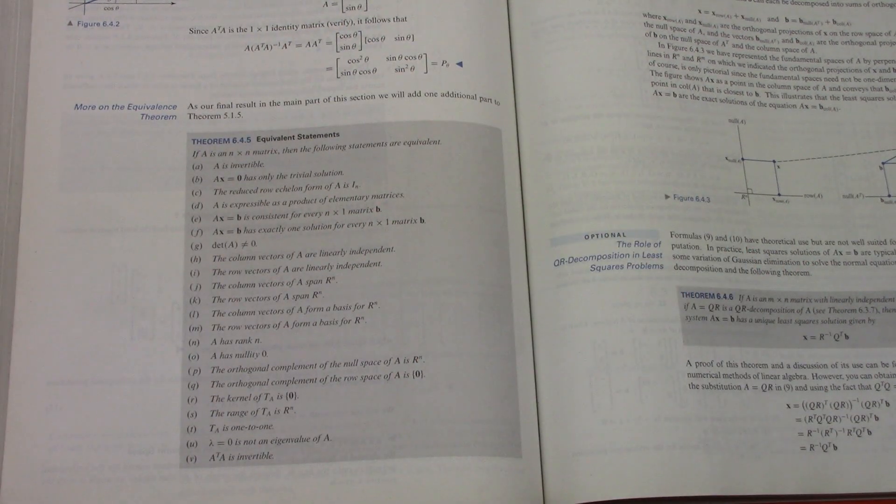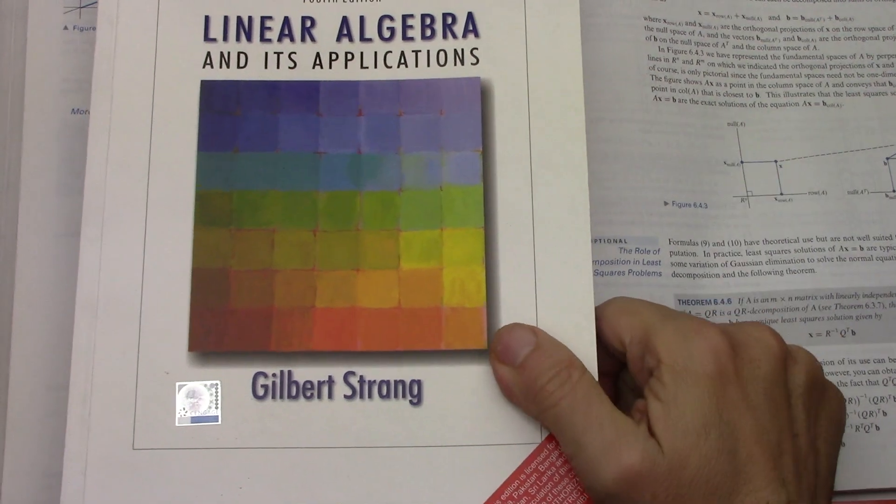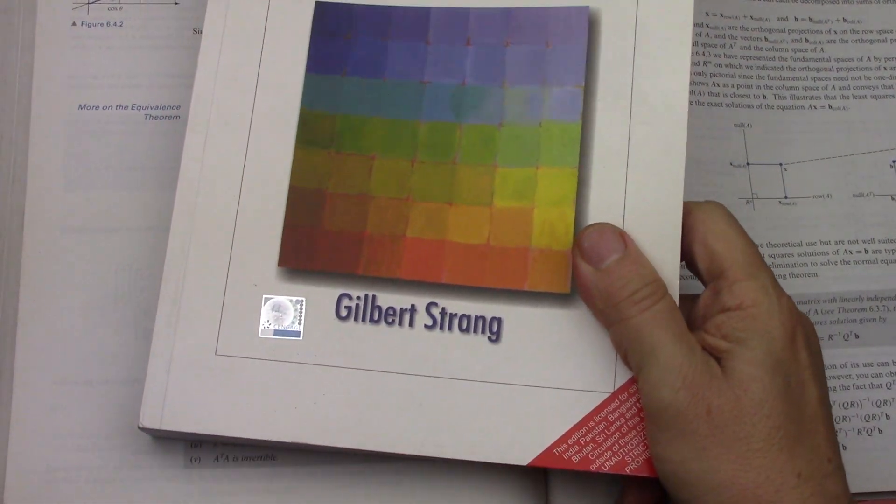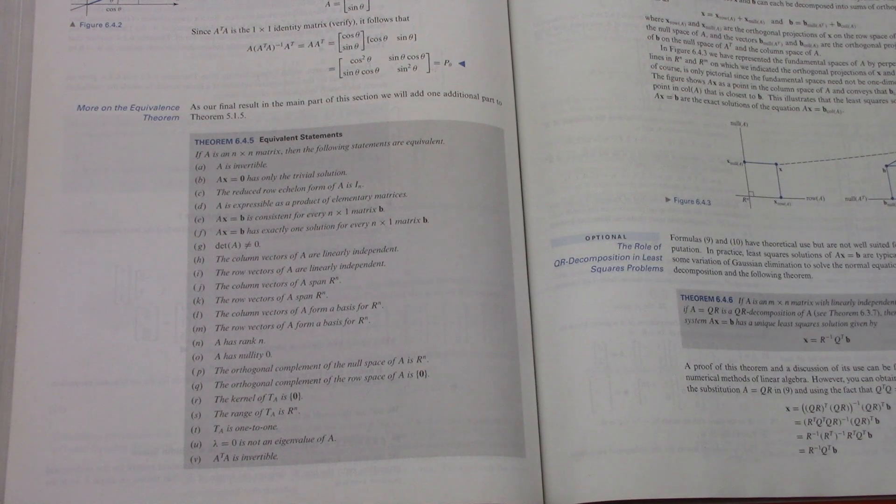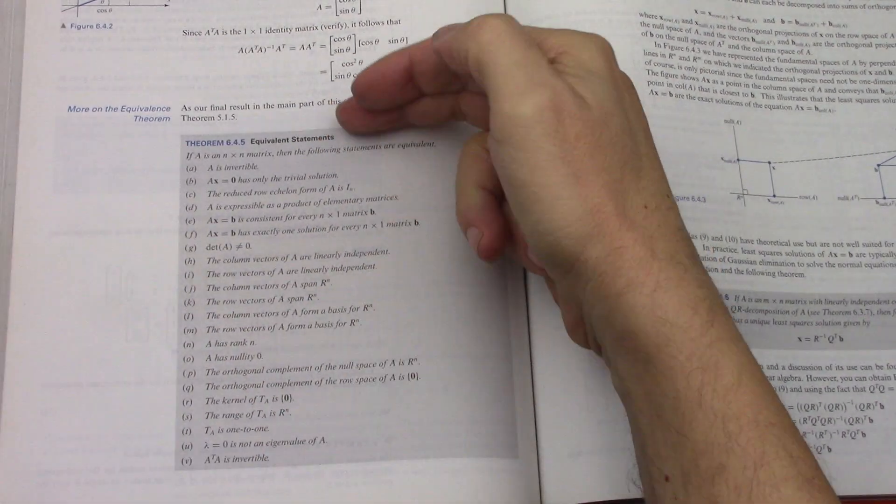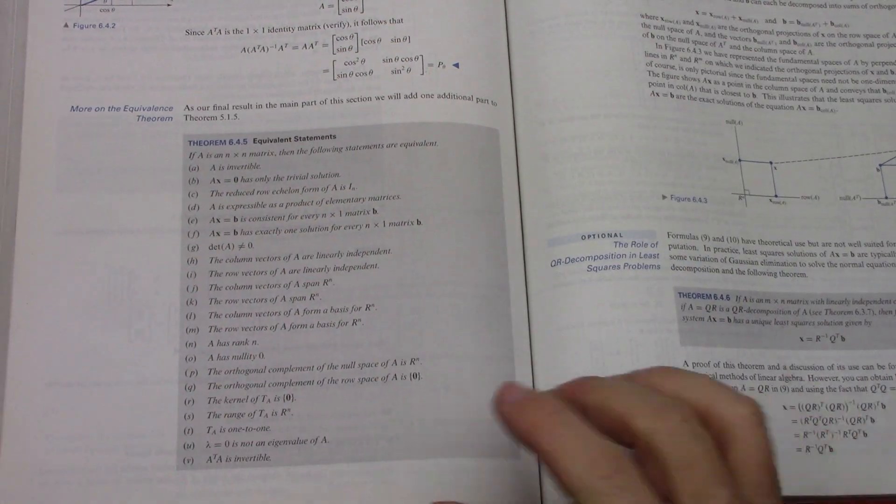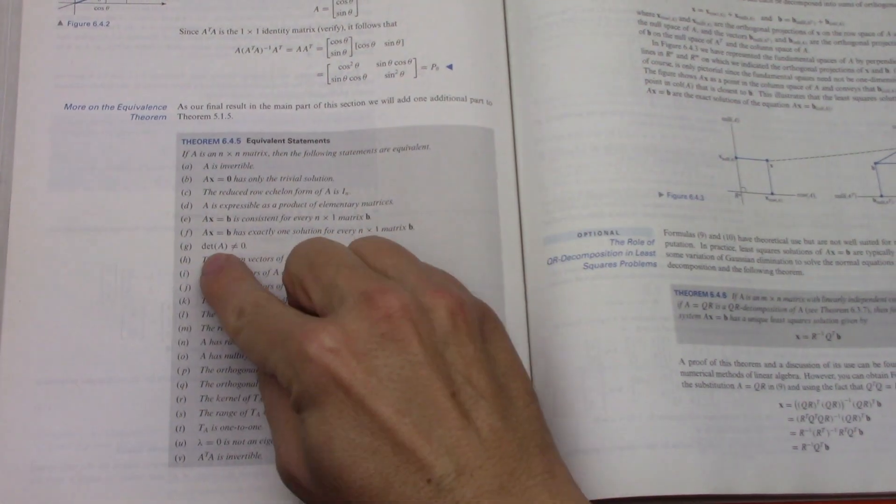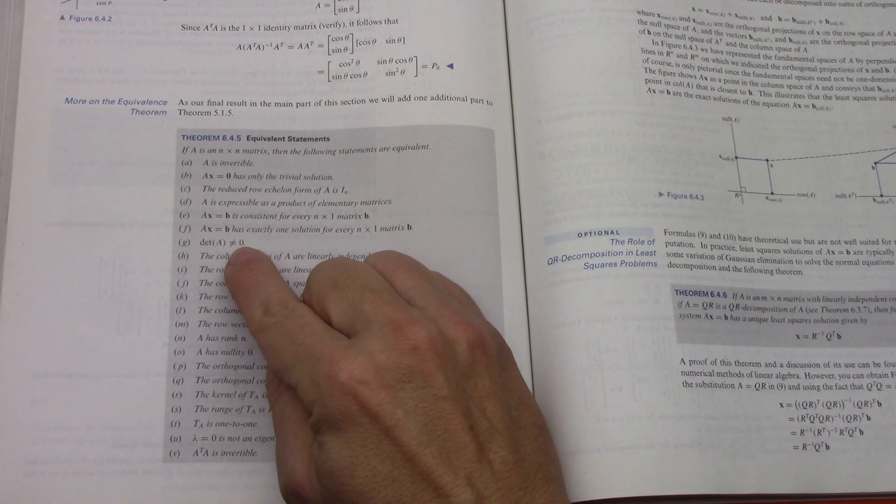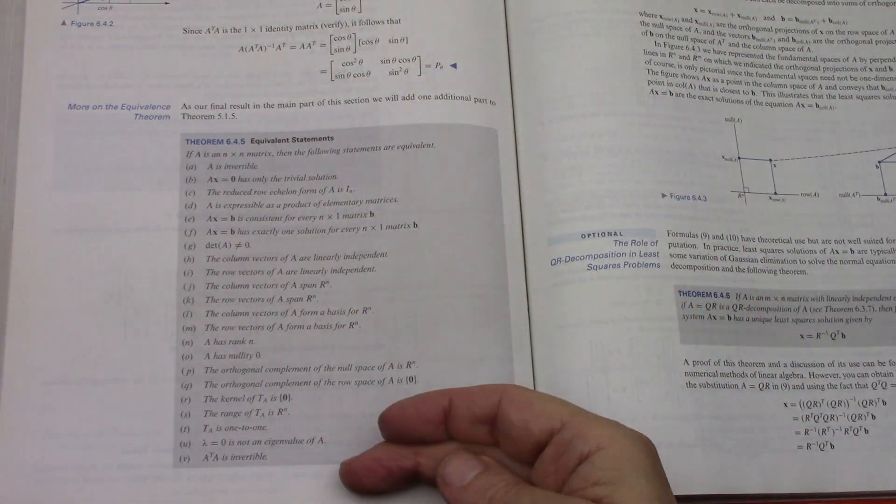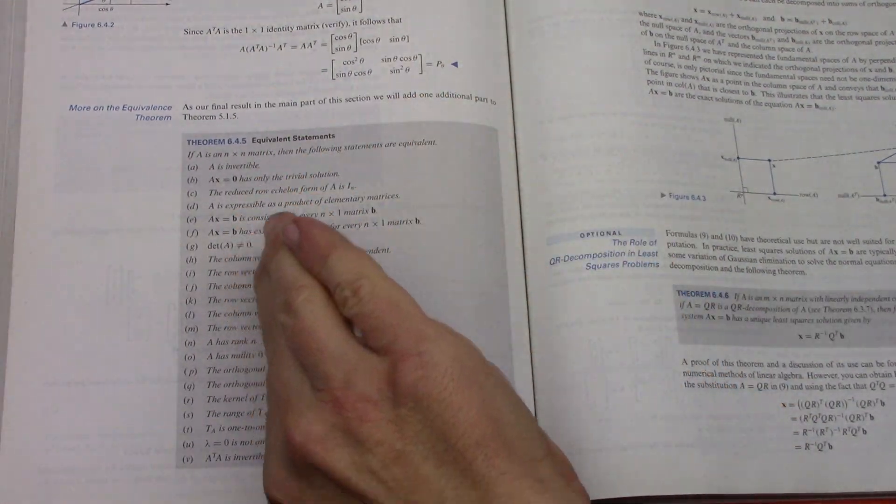For example, Strang has his own unique way of going through linear algebra, which I find really good. Also, Anton builds up this equivalent statement, which I used a lot when I was working on problems, where especially if the determinant of your matrix was not equal to zero, of course you had a square matrix, all these things were true, all of them.